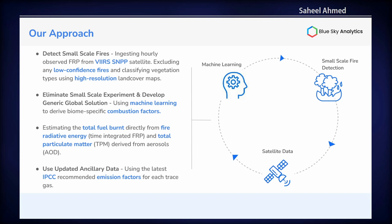Using high-resolution land cover maps from ESA and VIIRS fire data significantly improved the contribution and detection of small fires. We used machine learning to eliminate any form of local experiments, expanding to create more generic and robust global models that can incorporate spatial-temporal features available in different vegetation types — features generally not available in empirical or local models. We further compiled a list of studies to include the most recent updates on emission factors, helping to further refine our estimates.